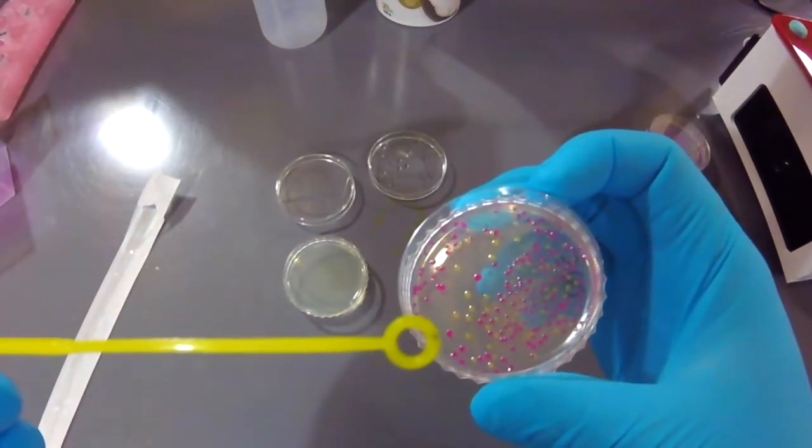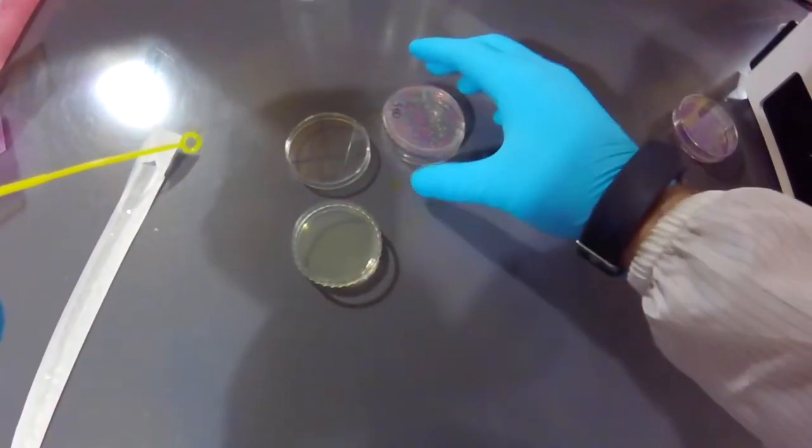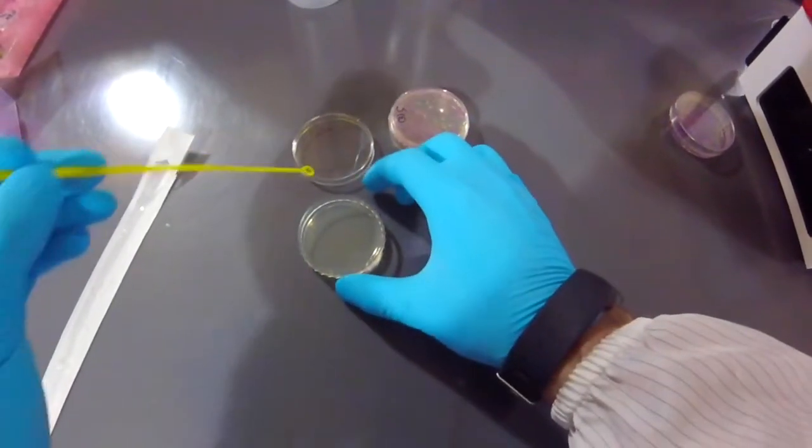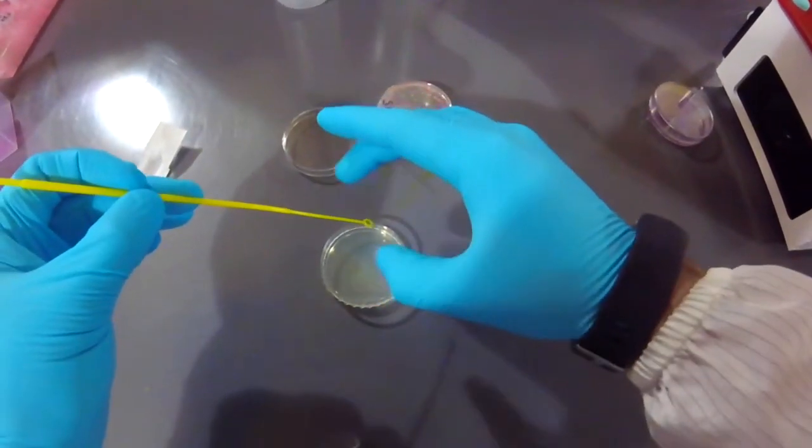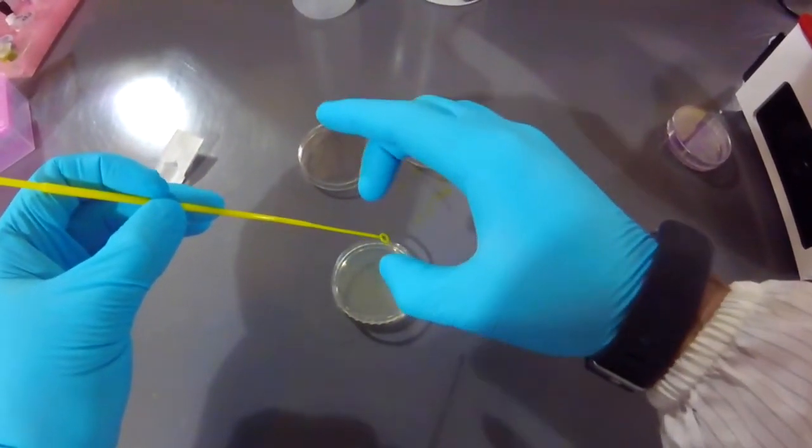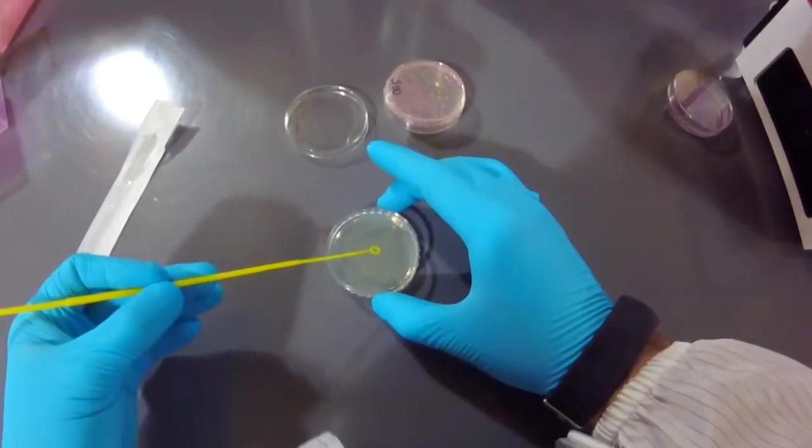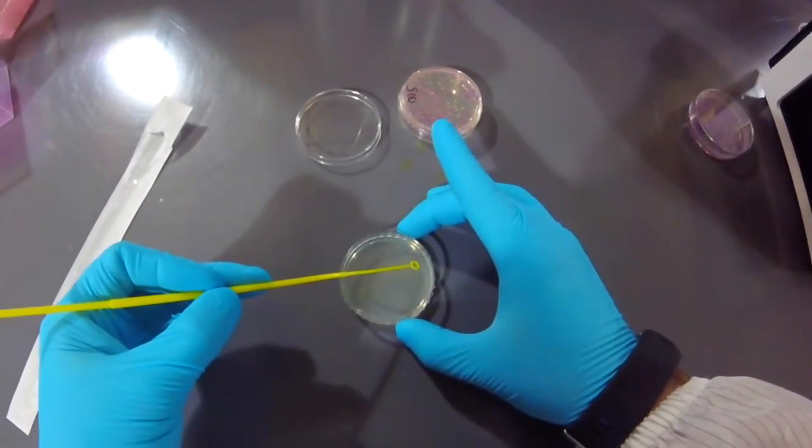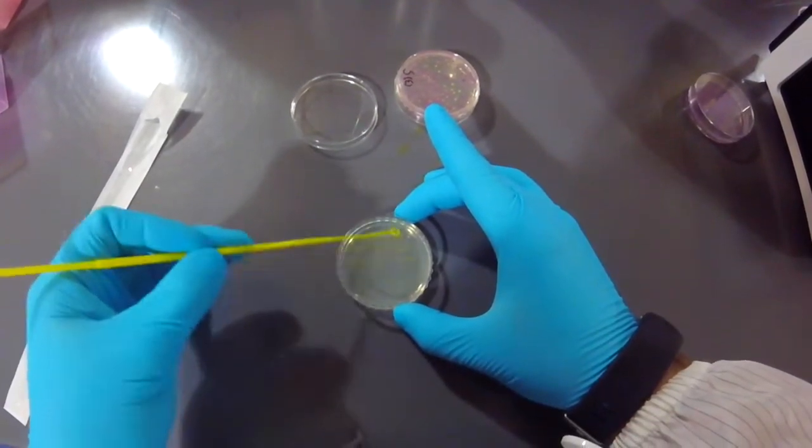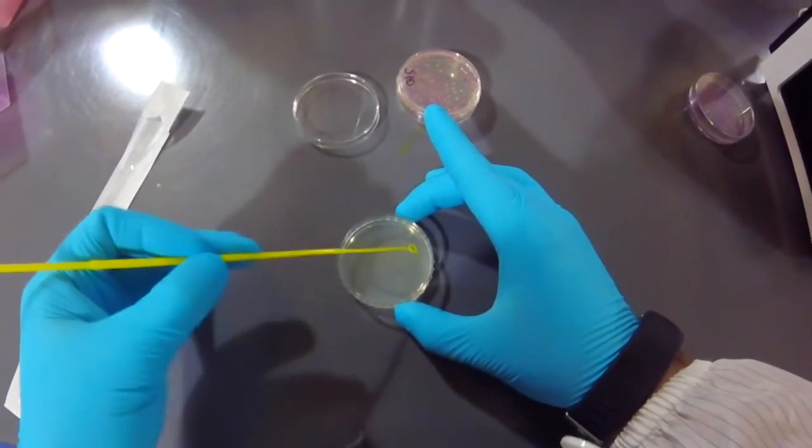So I touch it, you can even see it at the end of the loop here. So this is going to make up my first line, and I want to make sure that I don't touch the sides of this, because I'm going to use this clean sides for the second and third streak. So I'm going to keep it at a bit of an angle, and very lightly I'm going to do my first line, so I'm just going to go back and forth a little bit.